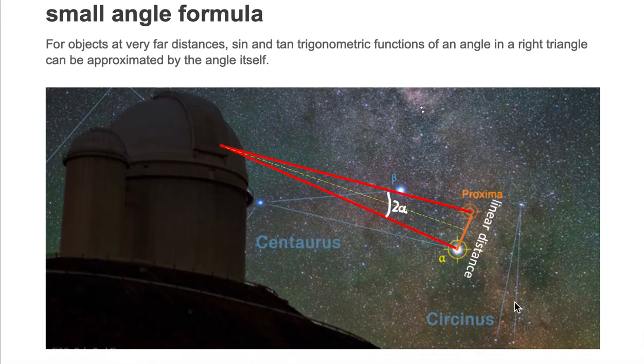For an example, we are looking at stars in the night sky from this observatory. These stars relative to the observatory are at very far distances, which meets part of the definition of our small angle formula.